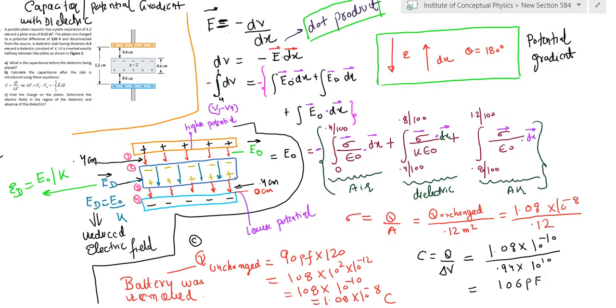Delta V has been calculated using the concept of the potential gradient. Calculate C is equal to q upon delta V. You will get 106 picofarad.